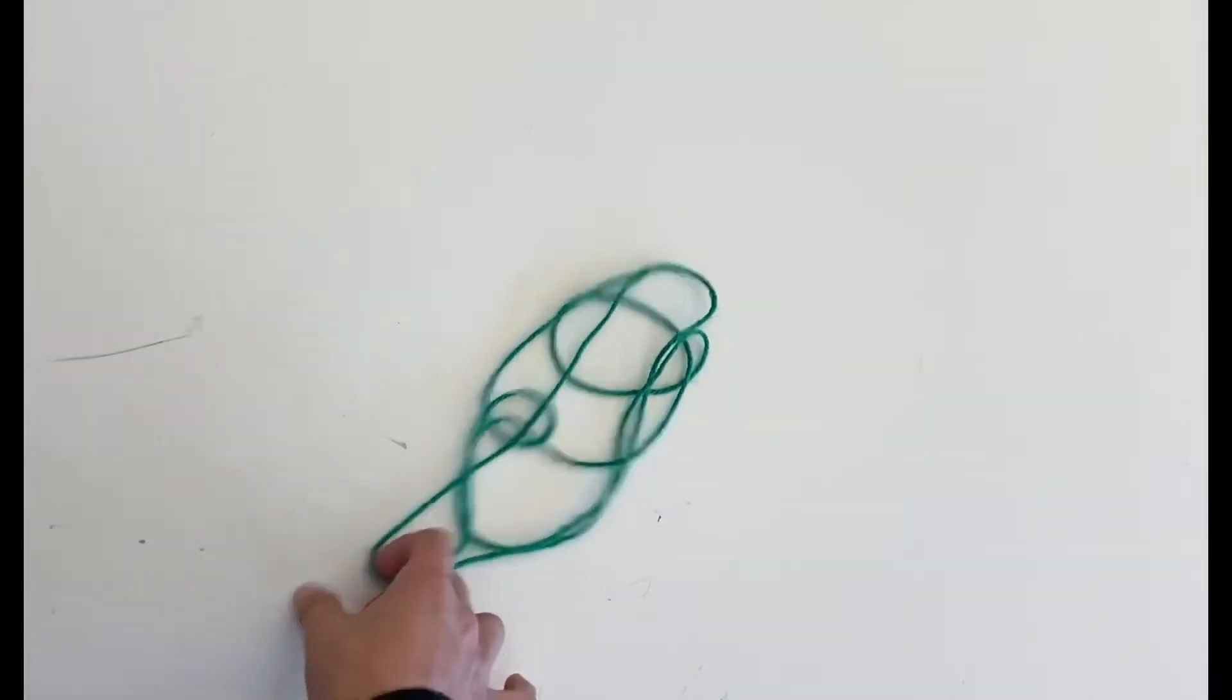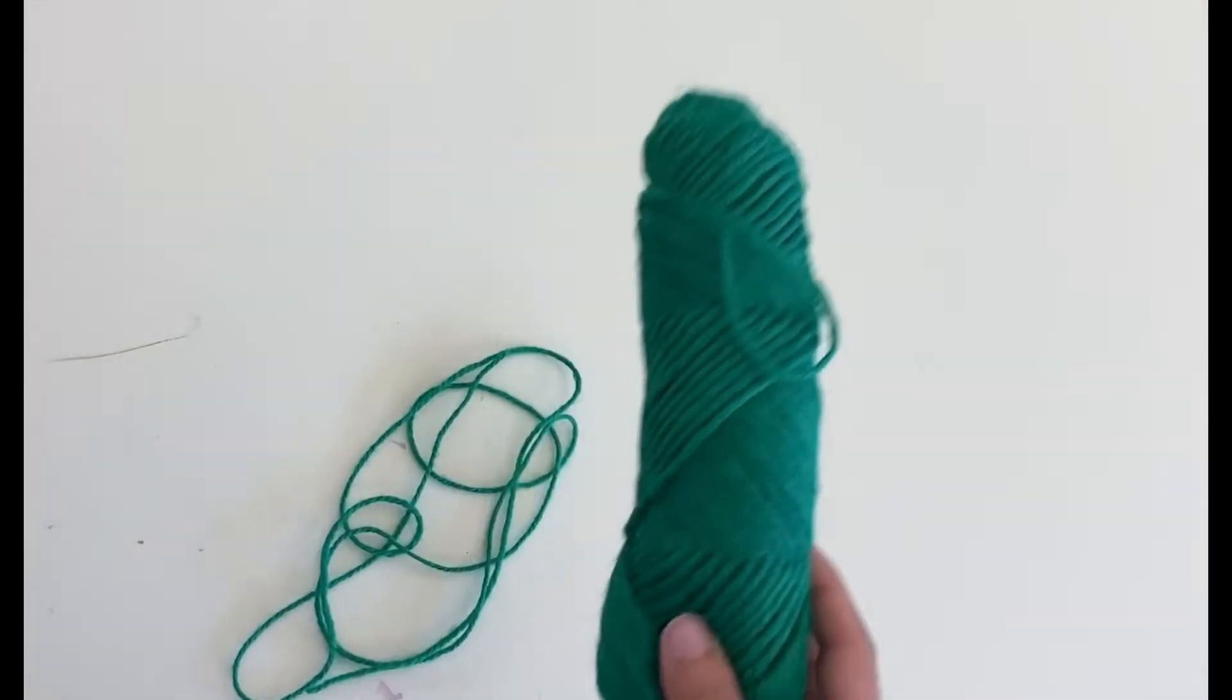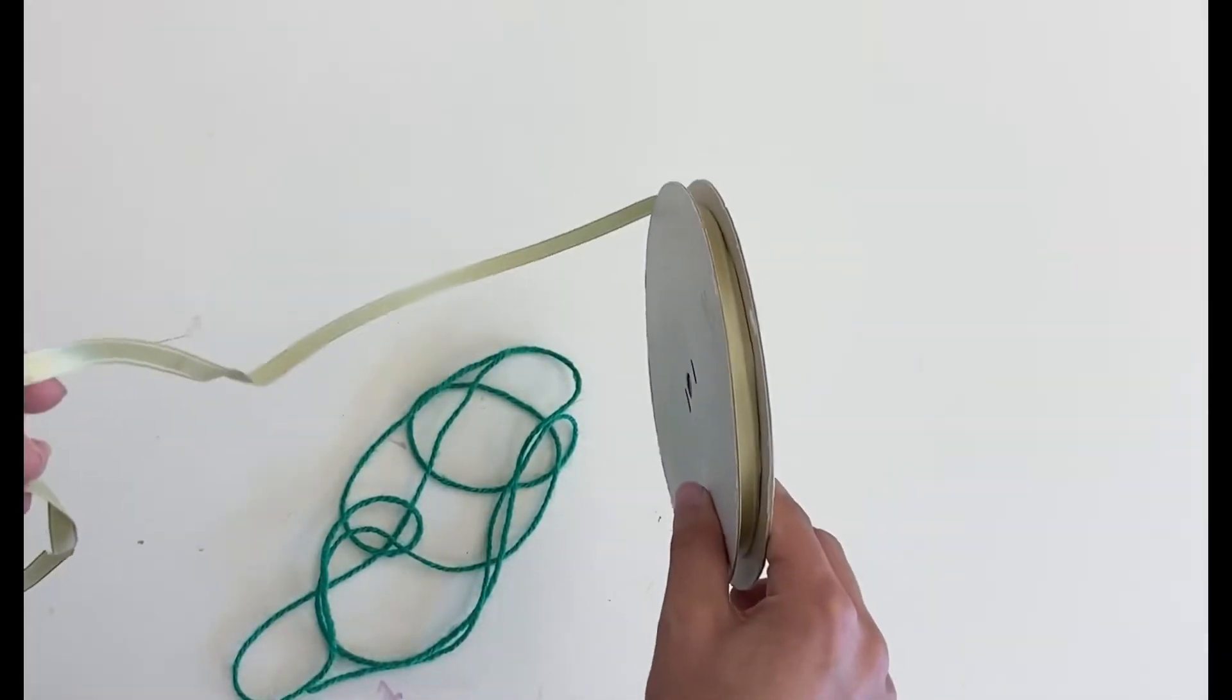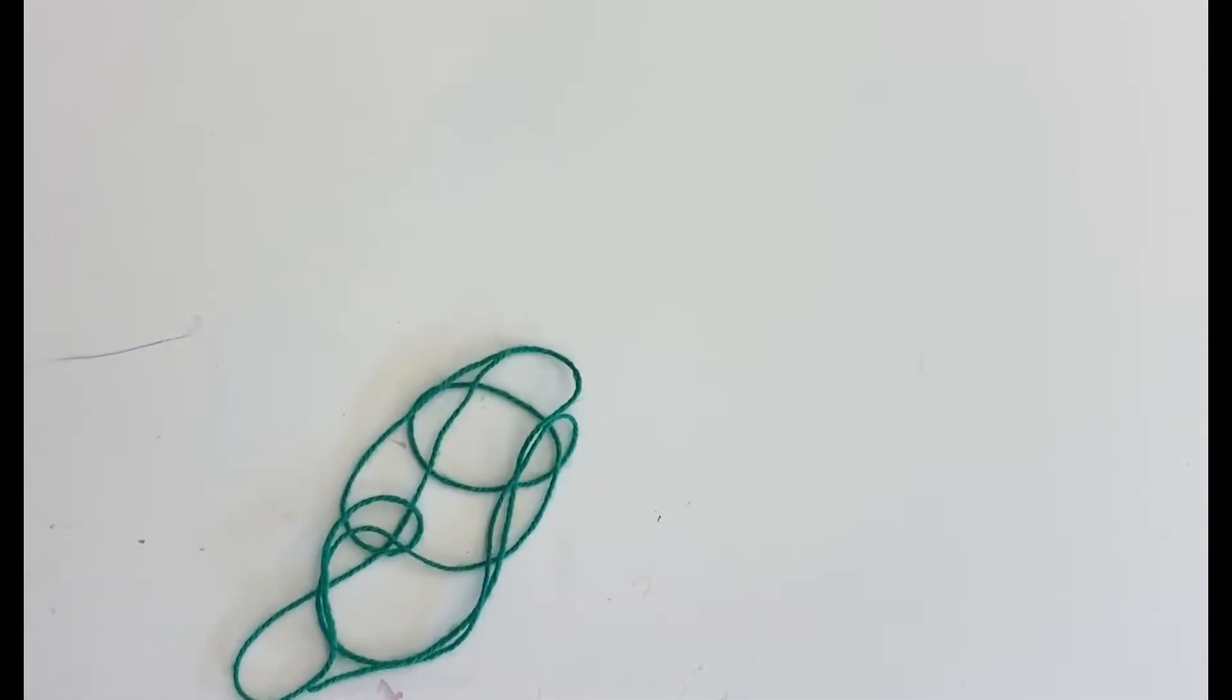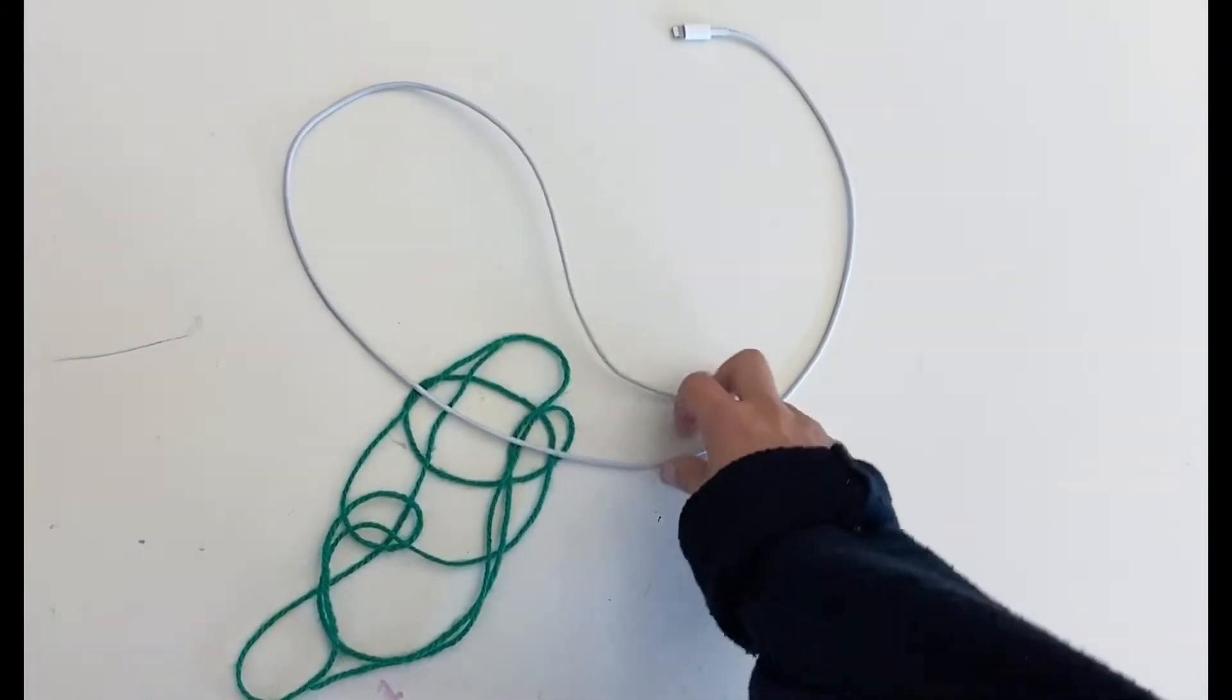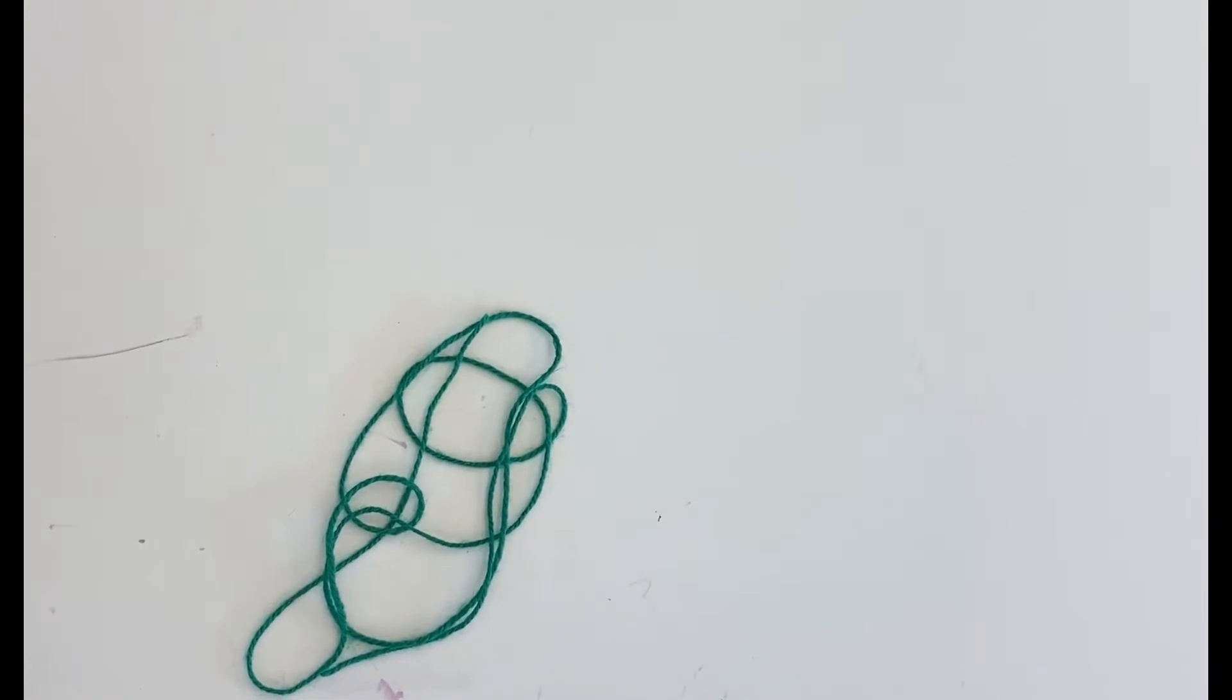Today we're going to make our temporary drawings using string, yarn, or any sort of wire that you might be able to find around the house. Here I have yarn but you can also find ribbon, maybe a shoelace, maybe your charging wire. You can use any sort of string or anything like that to create your temporary drawing today.